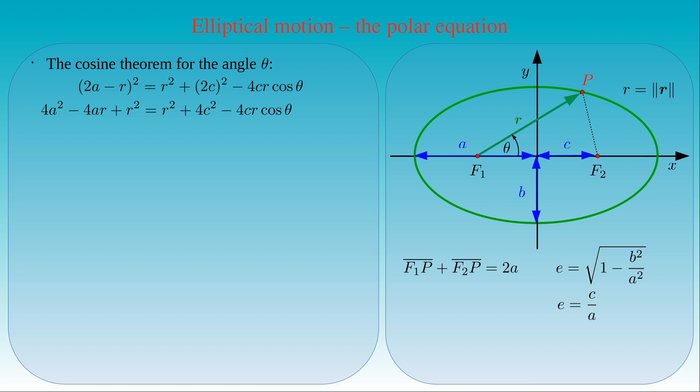The terms R squared cancel out each other on both sides of the equation, and we can divide the result by 4. Then we obtain that A squared minus A times R is equal to C squared minus C times R times cosine theta. If we regroup the terms in this equation, we see that A squared minus C squared is equal to R times A minus C times cosine theta.